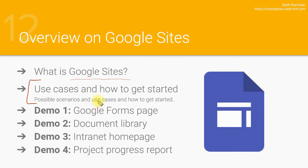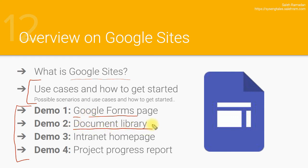I will end with four separate demos to close this section. I'll start with the most common use case — the easiest form of using Google Sites — which is creating a Google Form page with the questions page and the answers page. Then I'll show you how to embed a Google Drive folder or shared drive in a Google site to create a document library. After that, I'll quickly build a simple intranet website or portal where you can add internal applications or contact information for key people in the organization.